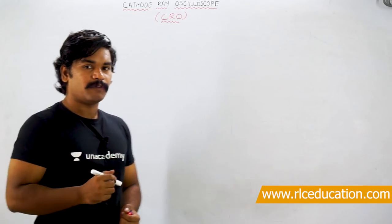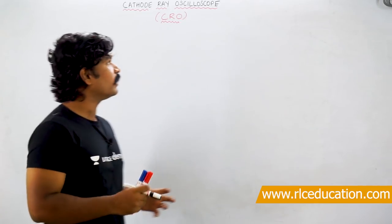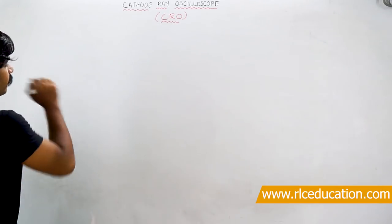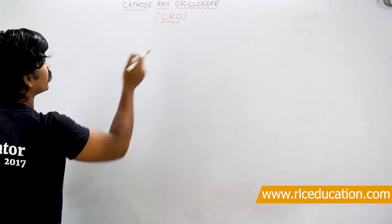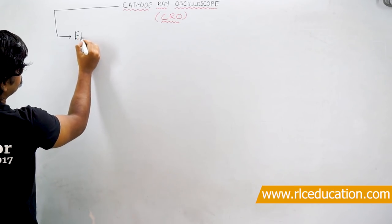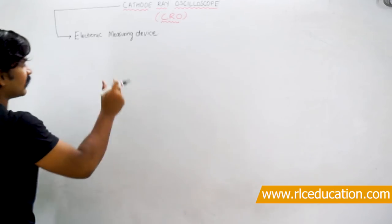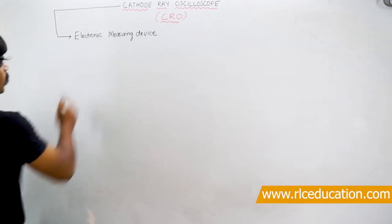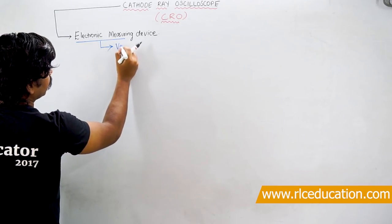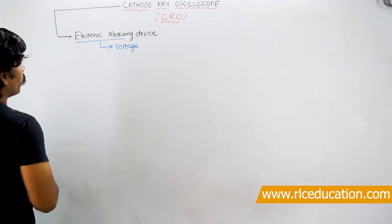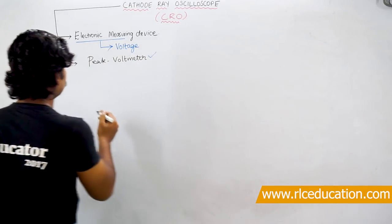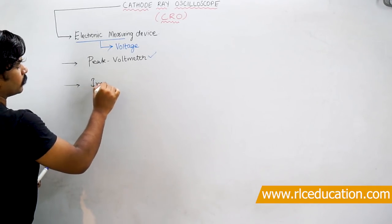Welcome to this video. We will discuss some important aspects about the CRO - Cathode Ray Oscilloscope - which is strictly helpful for examination. A cathode ray oscilloscope is basically an electronic measuring device. The actuating quantity for any electronic measuring device is voltage, so voltage is the actuating quantity for a CRO. Hence, a CRO is also called a peak voltmeter.